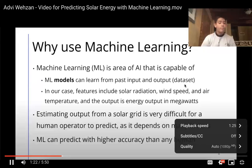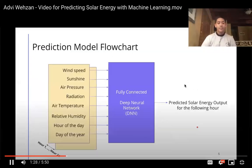Estimating output from a solar grid might be very difficult for a human, but with a correct training machine learning model, it's very easy and extremely accurate.